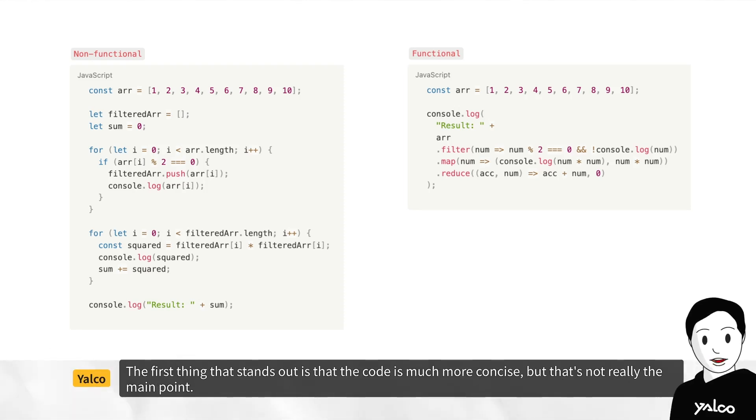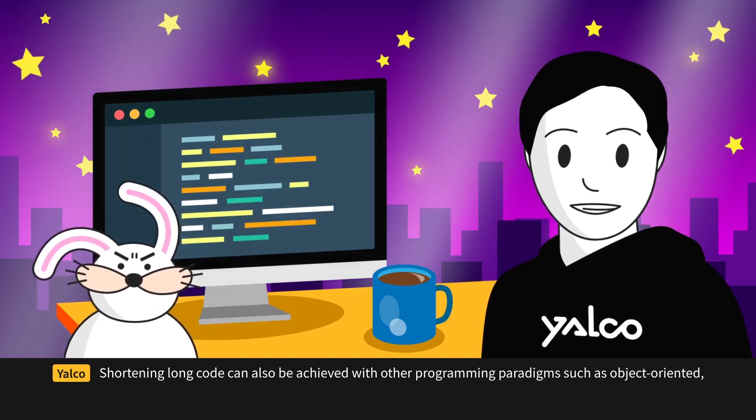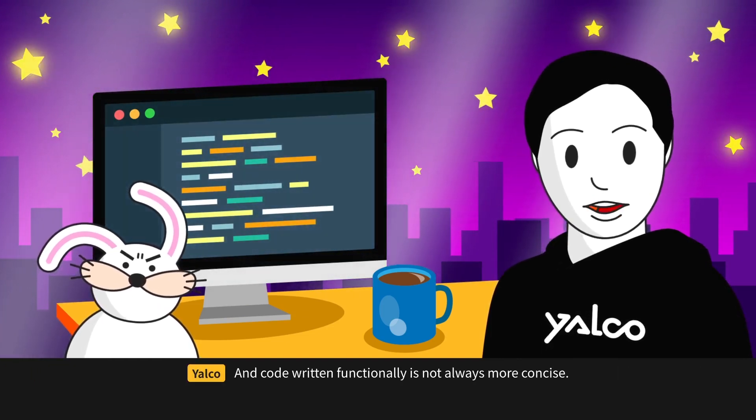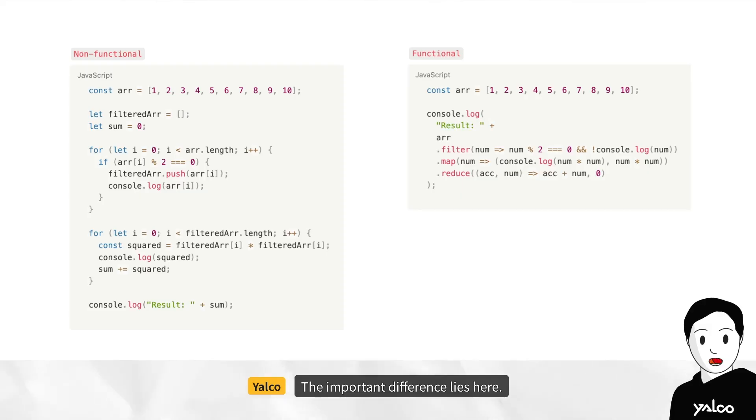The first thing that stands out is that the code is much more concise, but that's not really the main point. Shortening long code can also be achieved with other programming paradigms, such as object-oriented, and code written functionally is not always more concise. The important difference lies here.